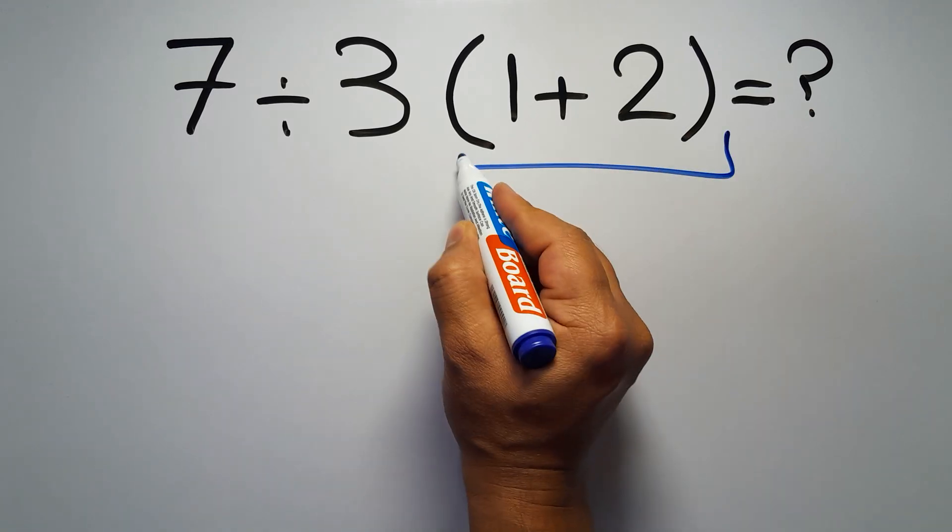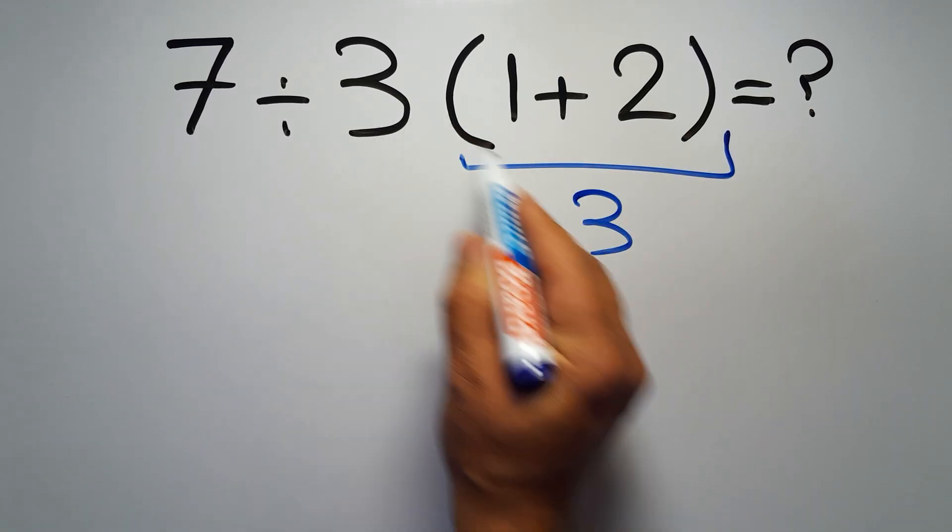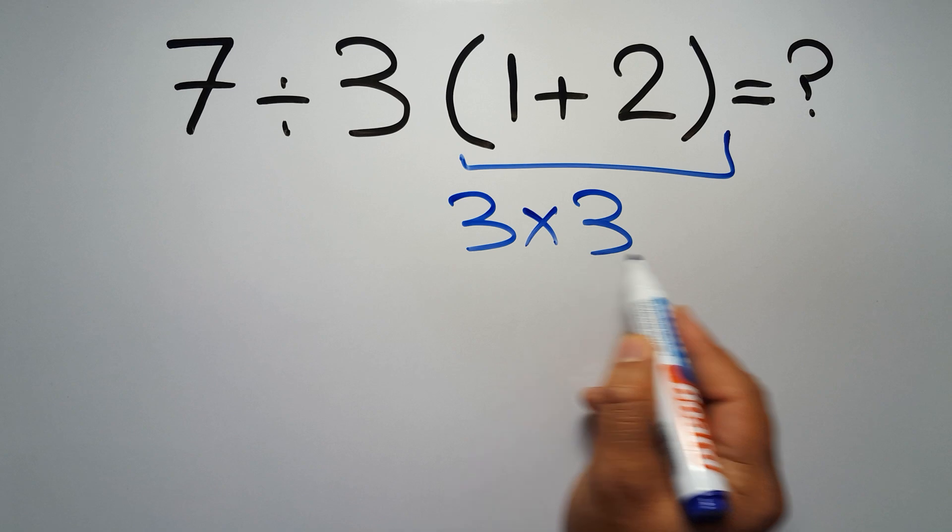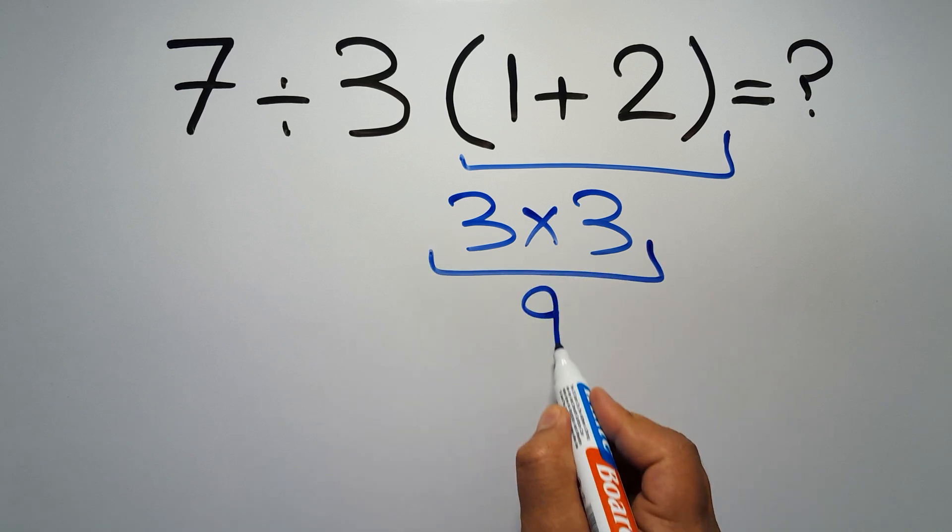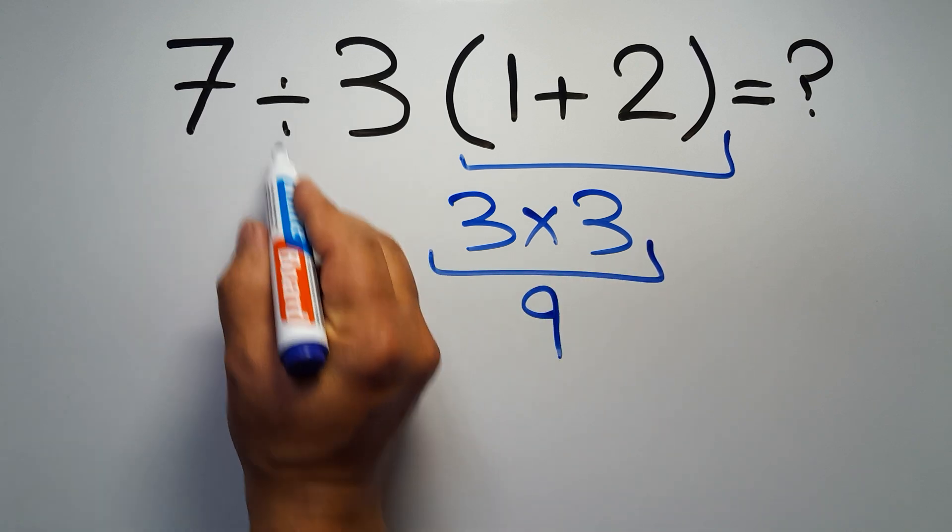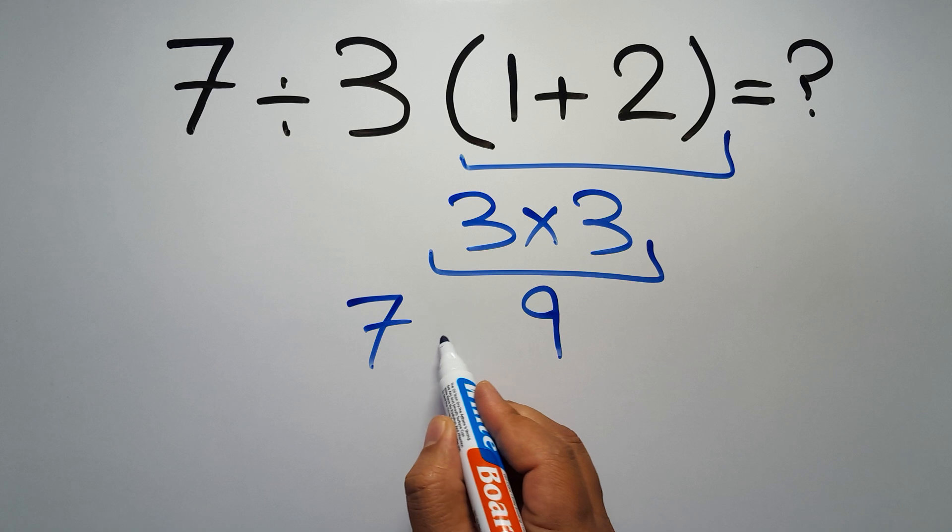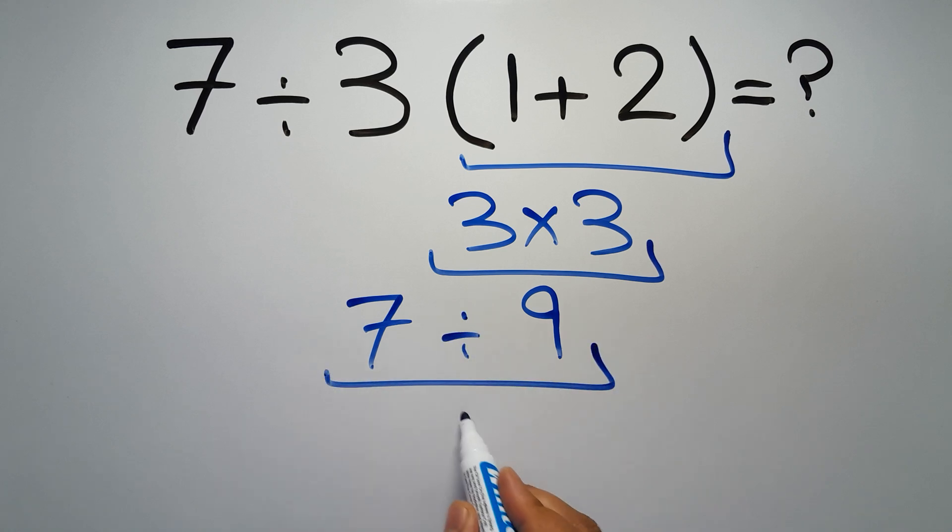1 plus 2 gives us 3, and 3 times 3 is just 9, so 7 divided by 9 can be written as 7 over 9.